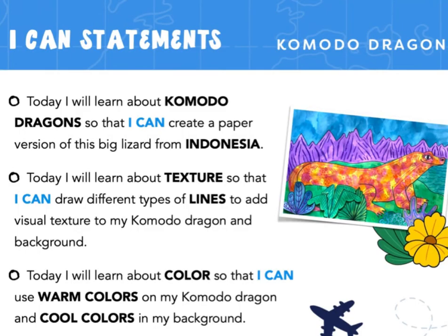Here are some 'I can' statements because I know you can do all of these things. Today I will learn about Komodo dragons so that I can create a paper version of this big lizard from Indonesia. Today I will learn about texture so that I can draw different types of lines to add visual texture to my Komodo dragon and background. Today I will learn about color so I can use warm colors on my Komodo dragon and cool colors in my background.